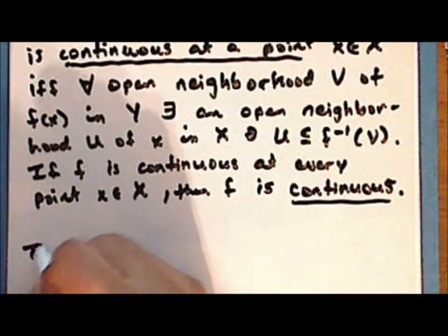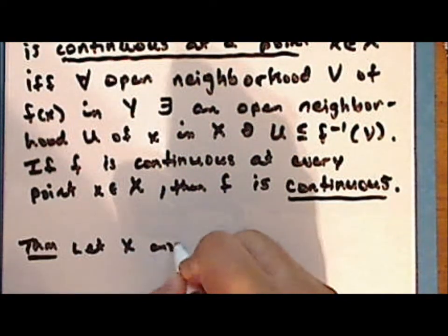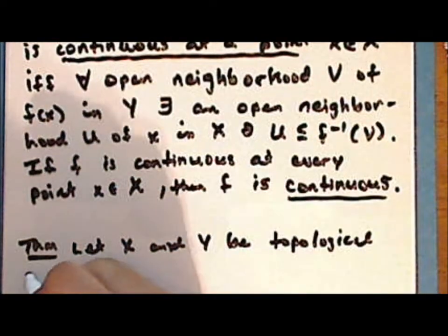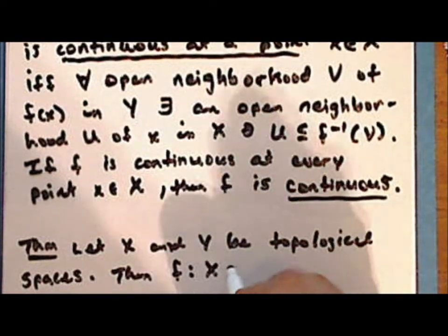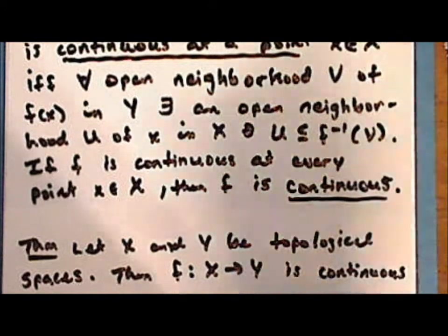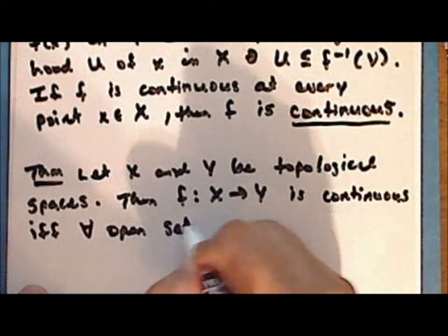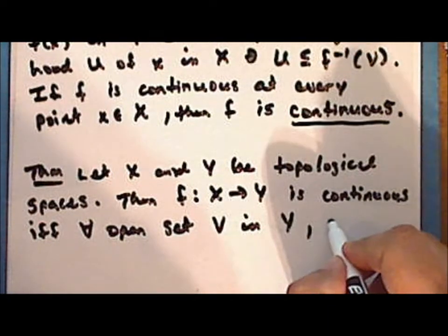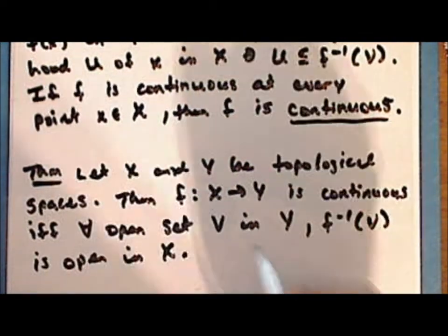So now we'll prove a theorem that will give us another way to determine whether or not a function is continuous. Let x and y be topological spaces. The function f is continuous if and only if for every open set v in the range space y, the inverse image of that set is open in the domain space x.